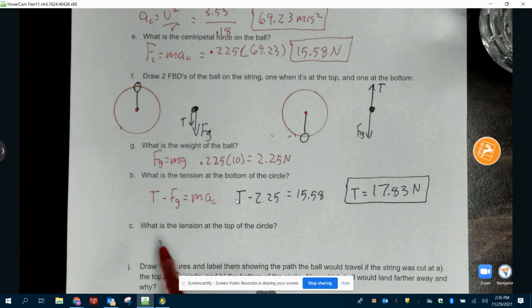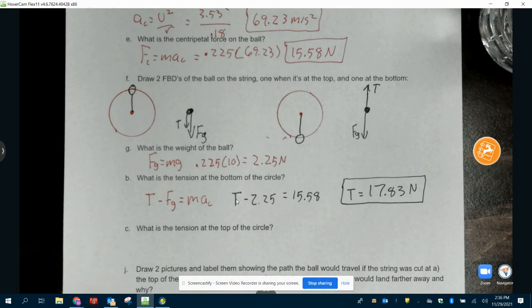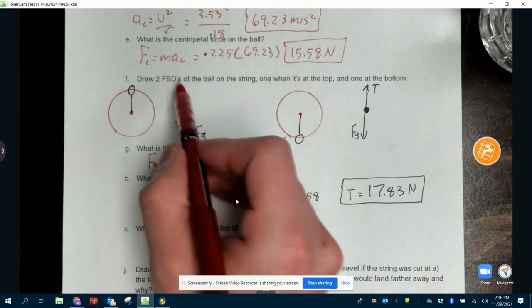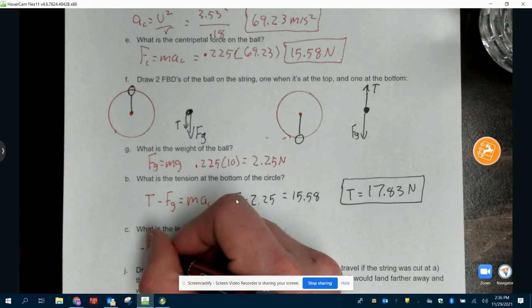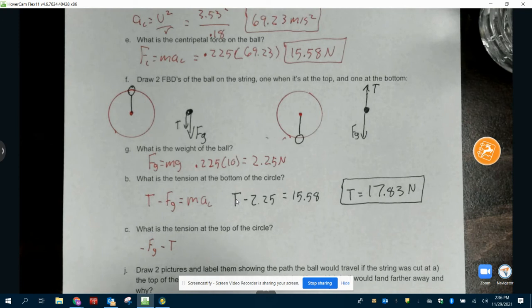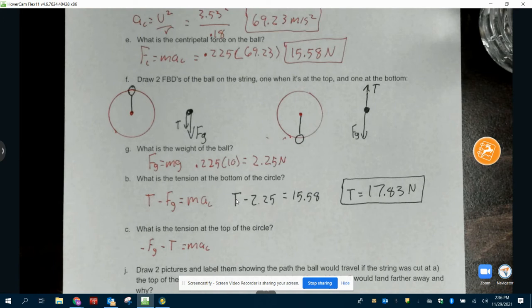Now we do the same thing. When we're going down, sorry, when we're at the top of the circle, so this one, right? Both of our things go down. So we're going to have negative FG minus tension, they're both negative because they're both going down, equals MAC.